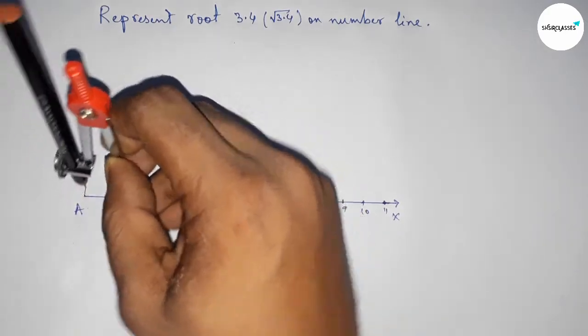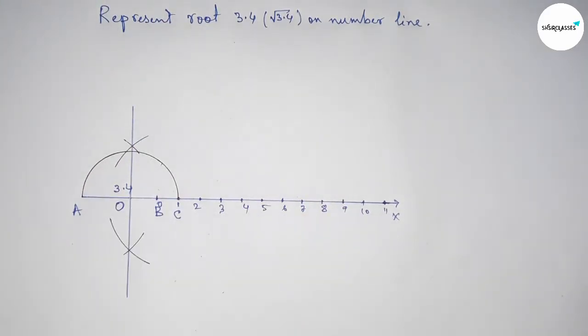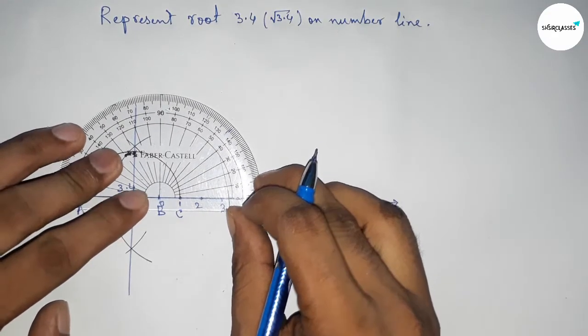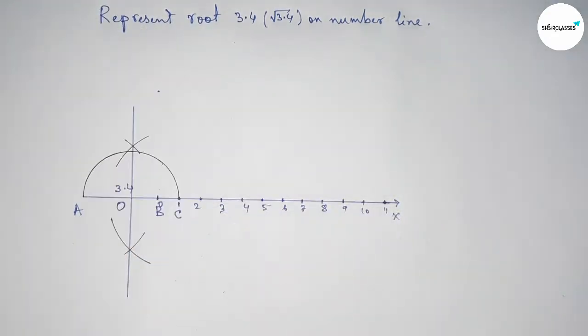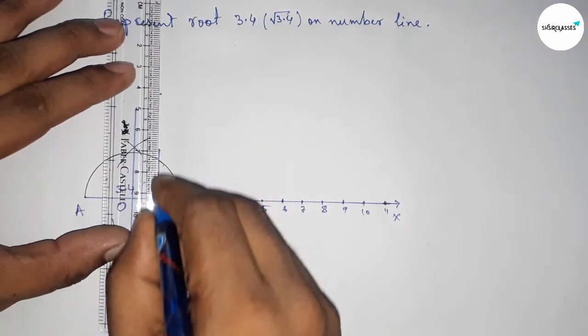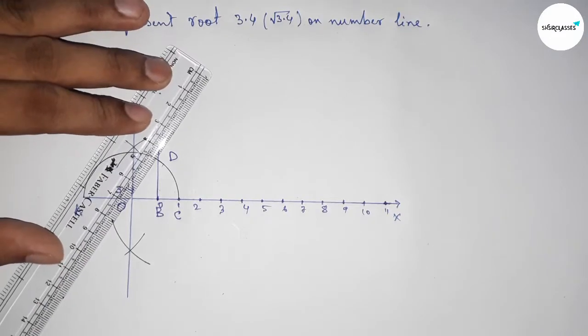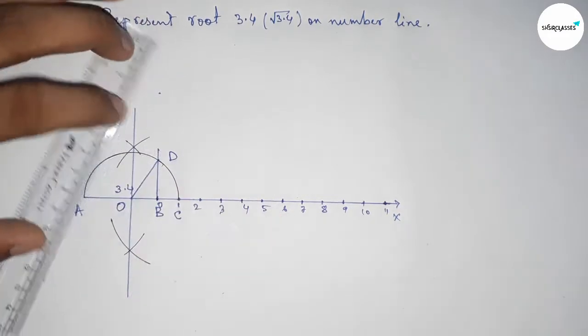Next, construct a 90-degree angle on point B by using a protractor. Join this, which meets the semicircle at point D. Then join O and D.